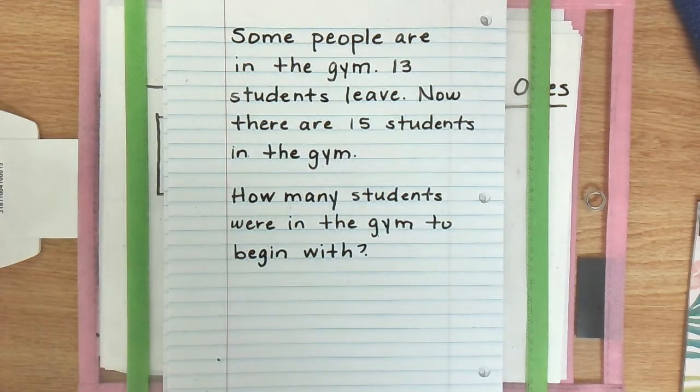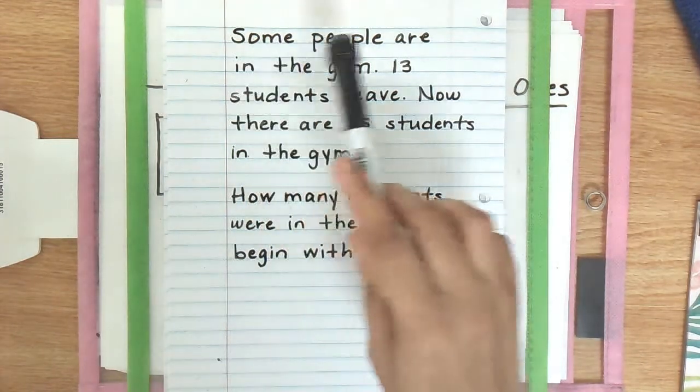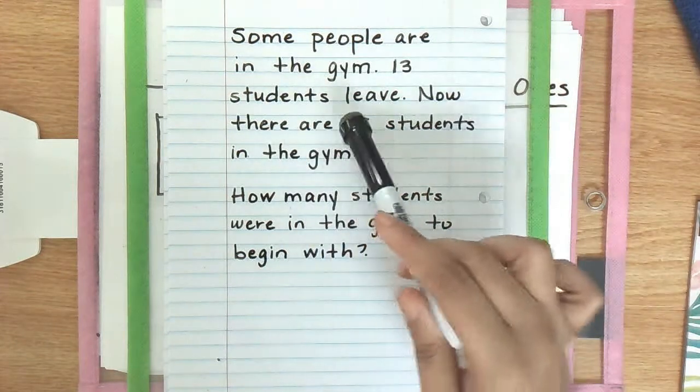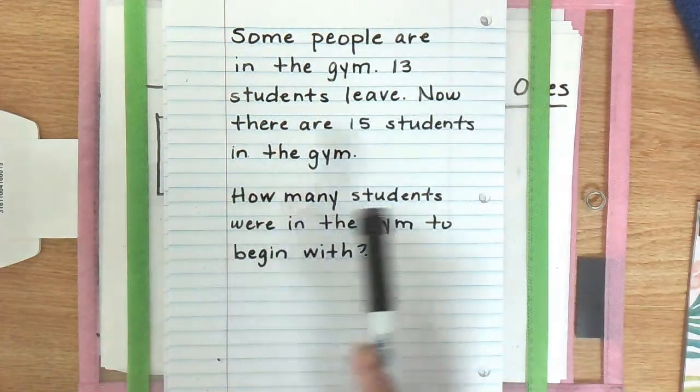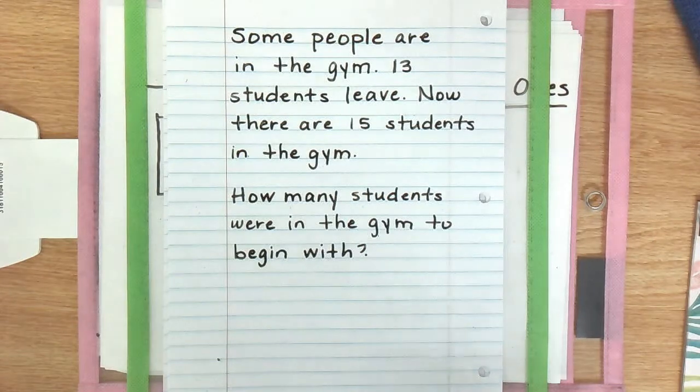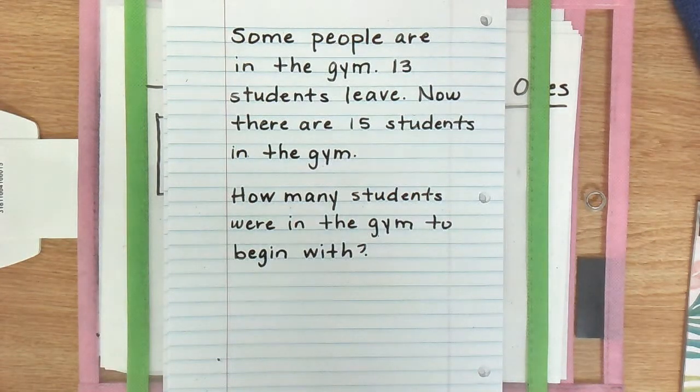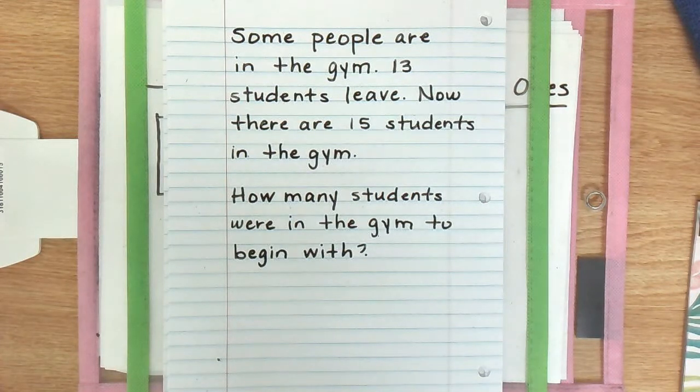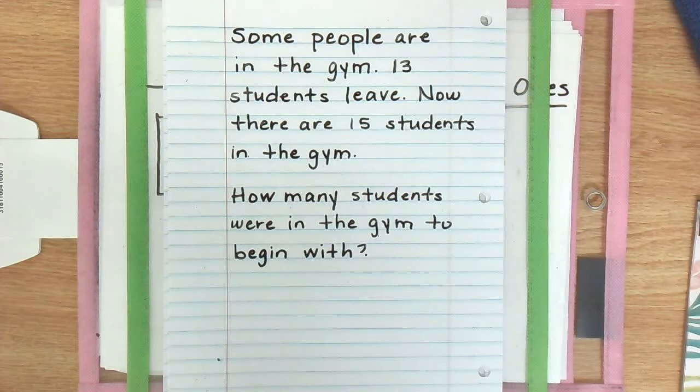If we take a look at our first word problem here we have: some students are in the gym, 13 students leave, now there are 15 students in the gym. How many students were in the gym to begin with? Now in class we always call this a three read. The first time we read it is for clarification or for understanding to know what the problem is about. The second time we read it is to read it sentence by sentence and underline and circle important information that we're going to need. The third time we read it is to solve it.